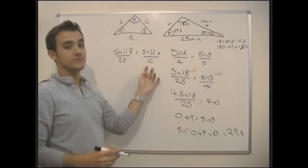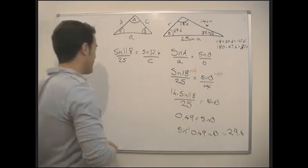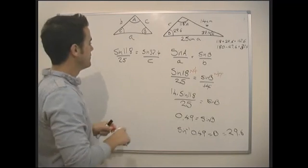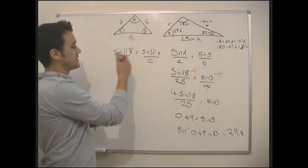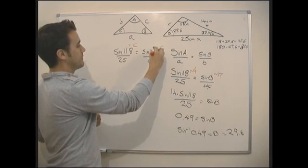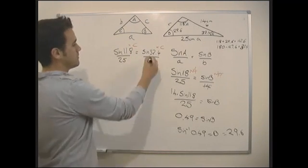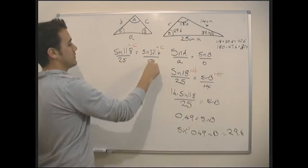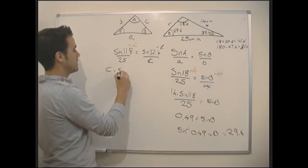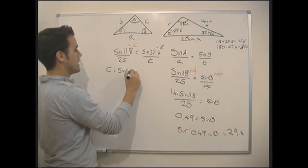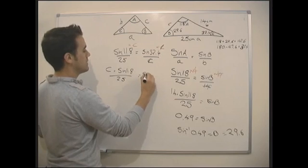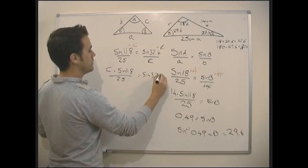So now we're going to have to do some algebra to get C as the subject. So first off, we want C at the top. So it's times everything by C. That will cancel the C's off of this side, won't it? So we end up with C times by sine 118 over 25 equals sine 32.4.